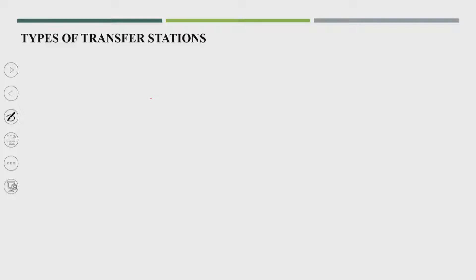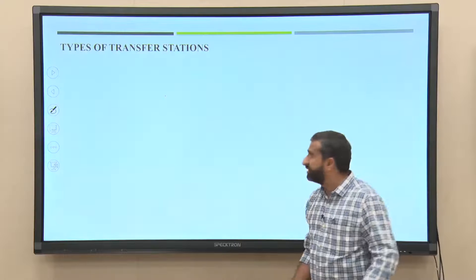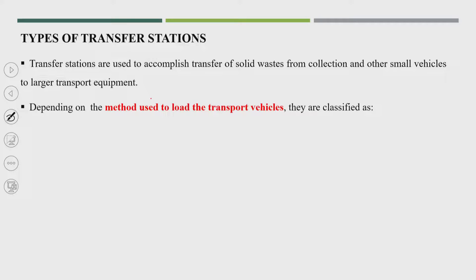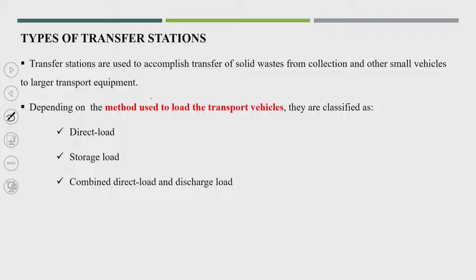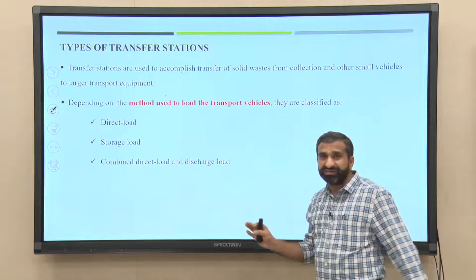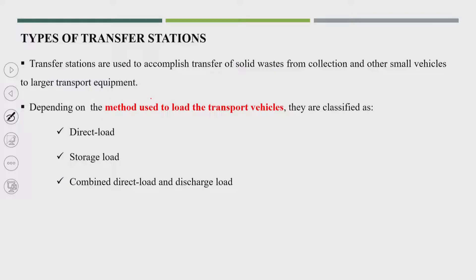Now we will discuss types of transfer stations. Transfer stations are classified based on the method used to load the transport vehicle: direct load transfer station, storage load transfer station, and a combined direct load and storage load transfer station. Based on planned benefits — such as recycling or composting facilities — we can choose among these three types.